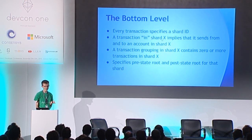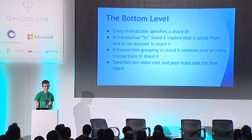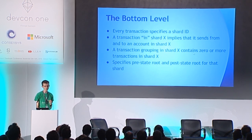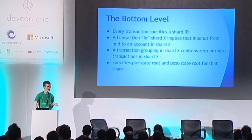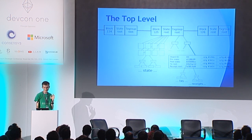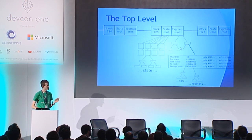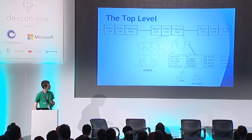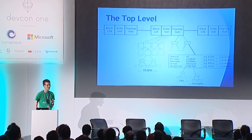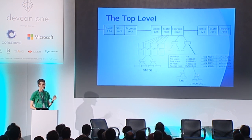Every transaction specifies a shard ID. A transaction in shard X means it does stuff only in shard X. A transaction grouping in shard X contains zero or more transactions in shard X and specifies a pre- and post-state root. This is probably one of the more complicated blockchain diagrams you're going to see this week — the major competitor is Jeff Coleman's universal hash time graph.